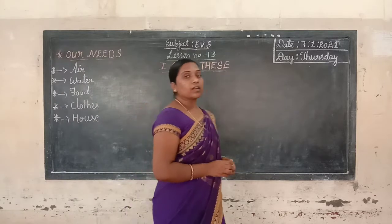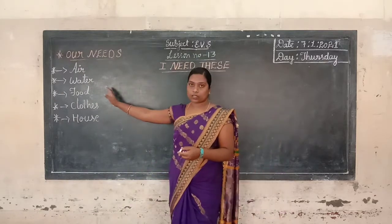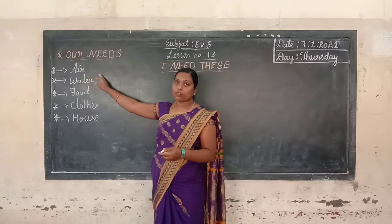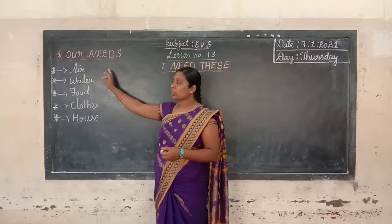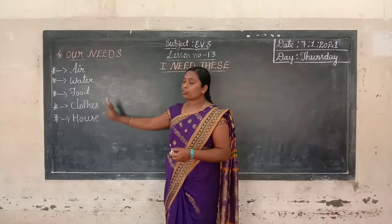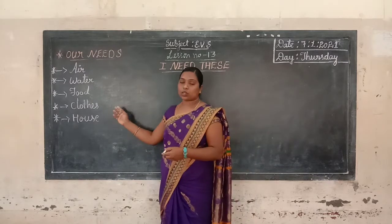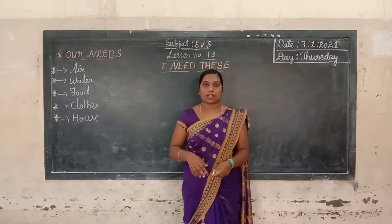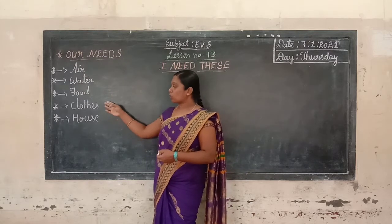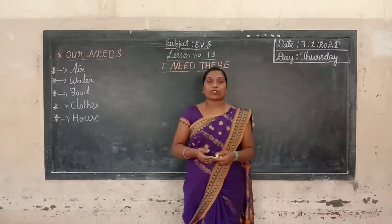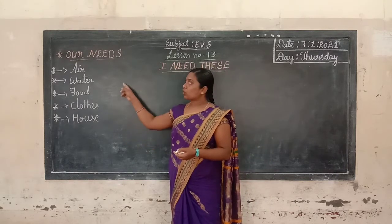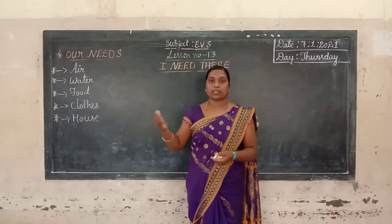These are our basic needs. Without these basic needs, we cannot live. Without air, we cannot live. Without water, we cannot live. Without food, we cannot live. Clothes are also very important to us. House is also protective — it protects us from cold, wind, and rain. Now let us learn each one of them in detail.